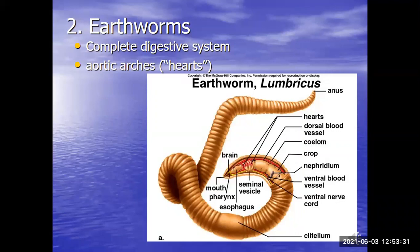An earthworm is not a polychaete — it's in its own group called oligochaetes. There are three classes: polychaetes are the marine worms, earthworms are a separate class (oligochaetes), and leeches are a third class.